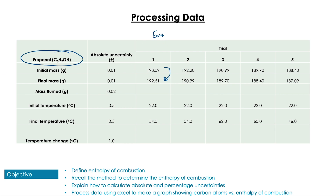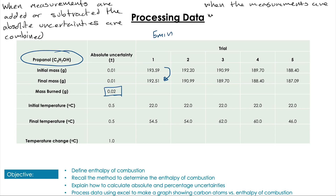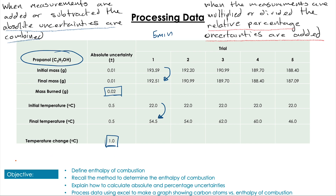So when processing data, I've got some data from propanol — you'll see the recorded initial and final mass after burning, burned for five minutes, and the initial and final temperature over those five minutes. The absolute uncertainty for the final combined value is found by adding the uncertainties of the two measurements, because when we add or subtract values the absolute uncertainties are added together. When we multiply or divide values, we need to convert to relative percentage uncertainties and combine those.